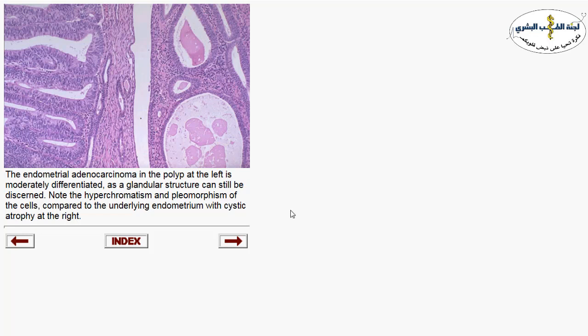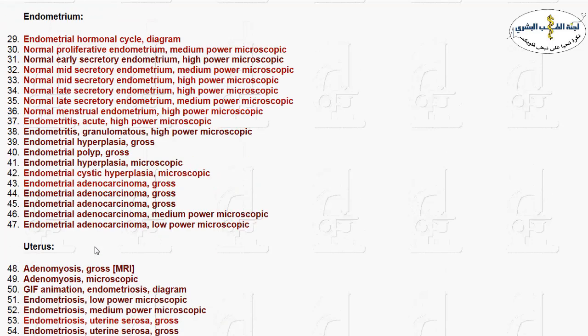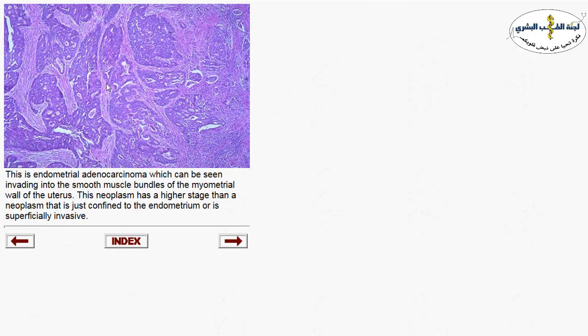When the endometrium is affected by atrophic changes, the glands usually become cystically dilated. Another picture of endometrial carcinoma shows back-to-back glands, cribriform pattern, bridging, and atypia.